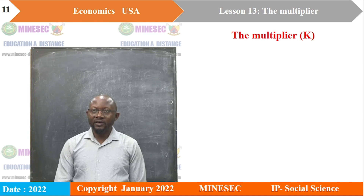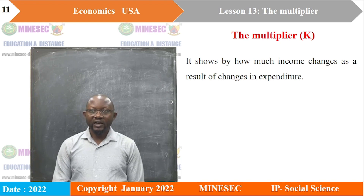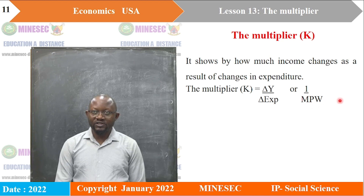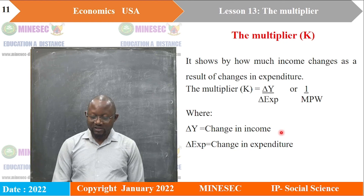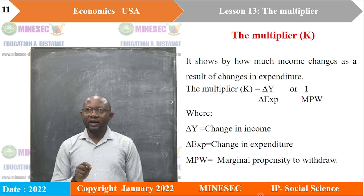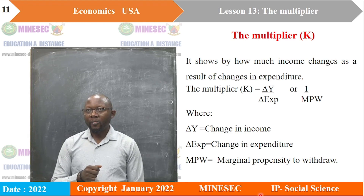The multiplier is denoted by K. It is defined as the ratio by which income changes as a result of changes in expenditure. It is given by the formula: change in Y divided by change in expenditure, or 1 over the marginal rate of leakages. It shows how a slight change in expenditure leads to a more than proportionate change in income.